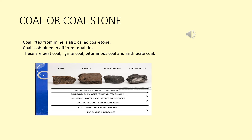Coal is used mainly as fuel. Besides this, by its destructive distillation, many important chemicals are obtained: coal tar, coal gas, gas carbon and coke. Coke is used as a reducing agent in metal extraction. During destructive distillation, gas carbon deposits on the wall of the retort. Gas carbon is a conductor of heat and electricity, so it is used in batteries, electric fans and arc lamps. Coal gas is also used as fuel.